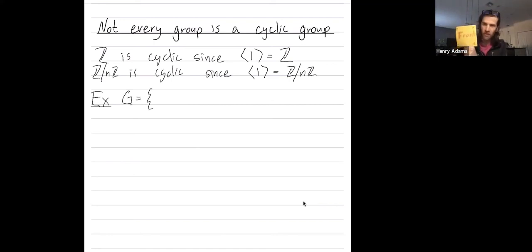So this group has eight elements. It has a rotation by zero degrees, just map it to where it is. You can rotate by 90 degrees. You can rotate by 180 degrees. You can rotate by 270 degrees.